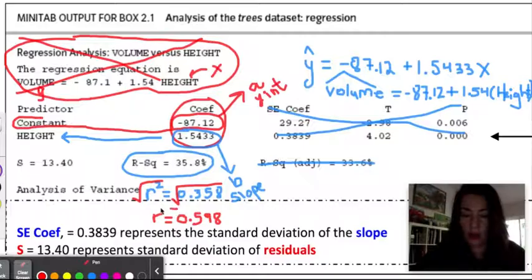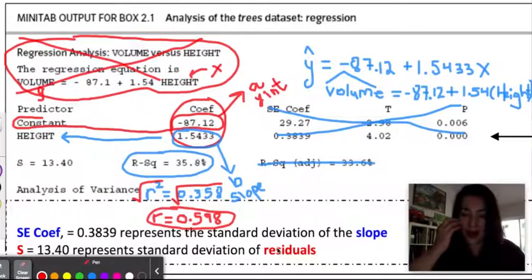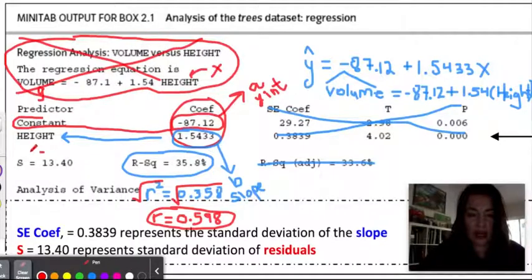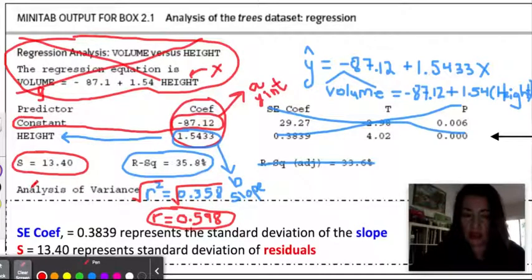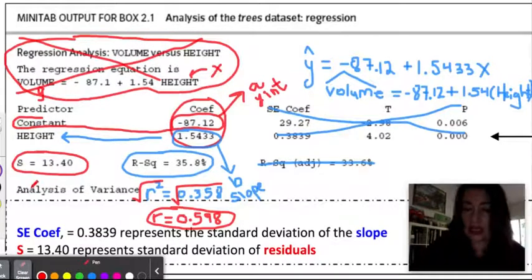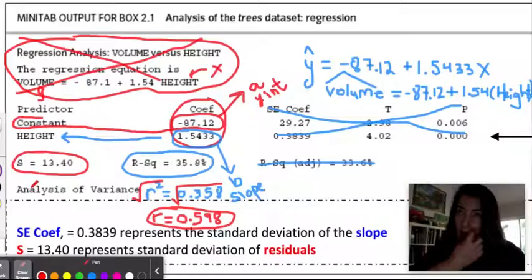The last thing I want to talk about is the standard deviation of the residuals. This s represents the standard deviation of the residuals, which in this case is 13.40. The standard deviation of the residuals is, on average, how far the actual points are from the predicted points.